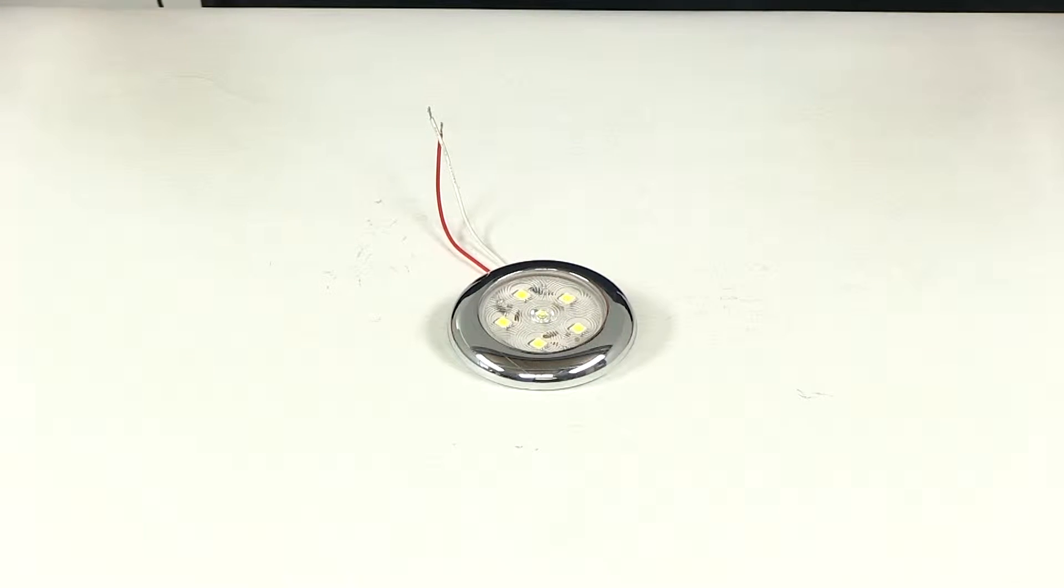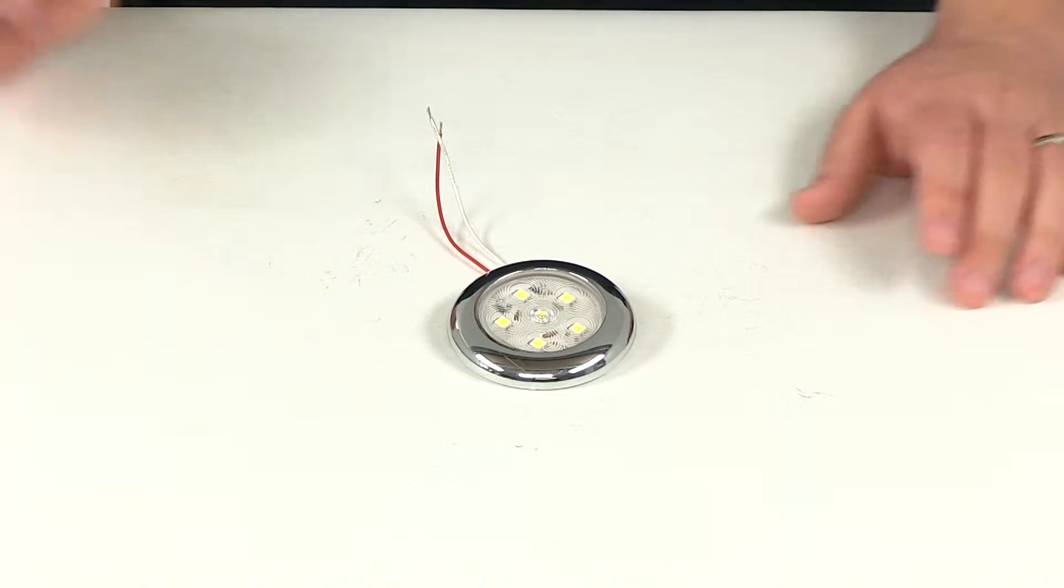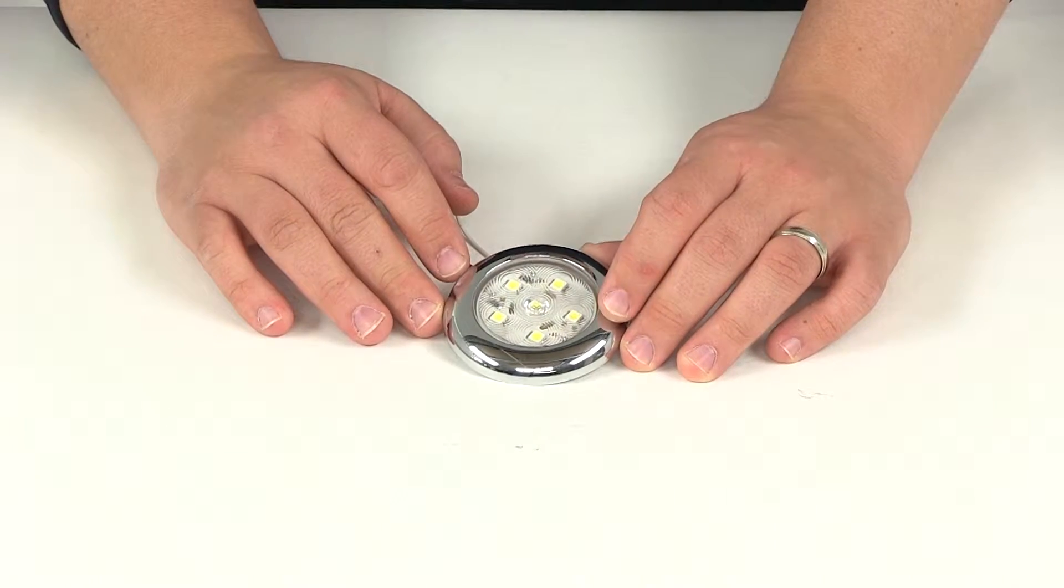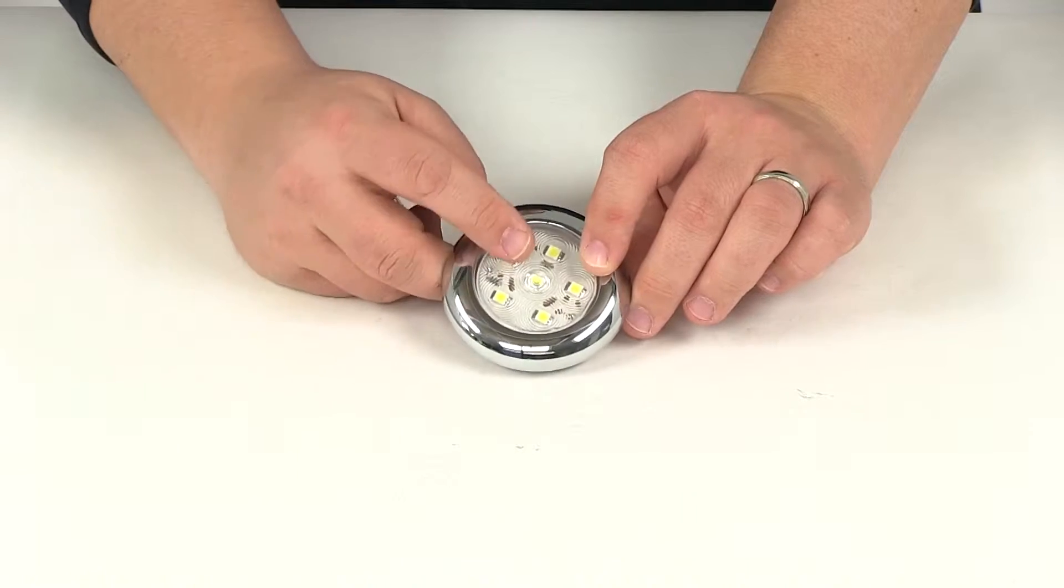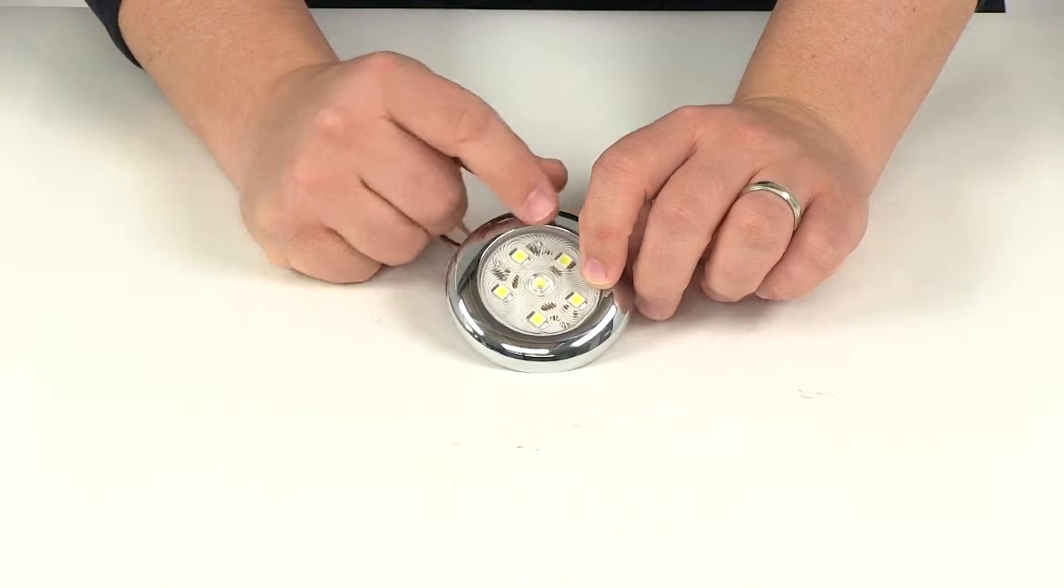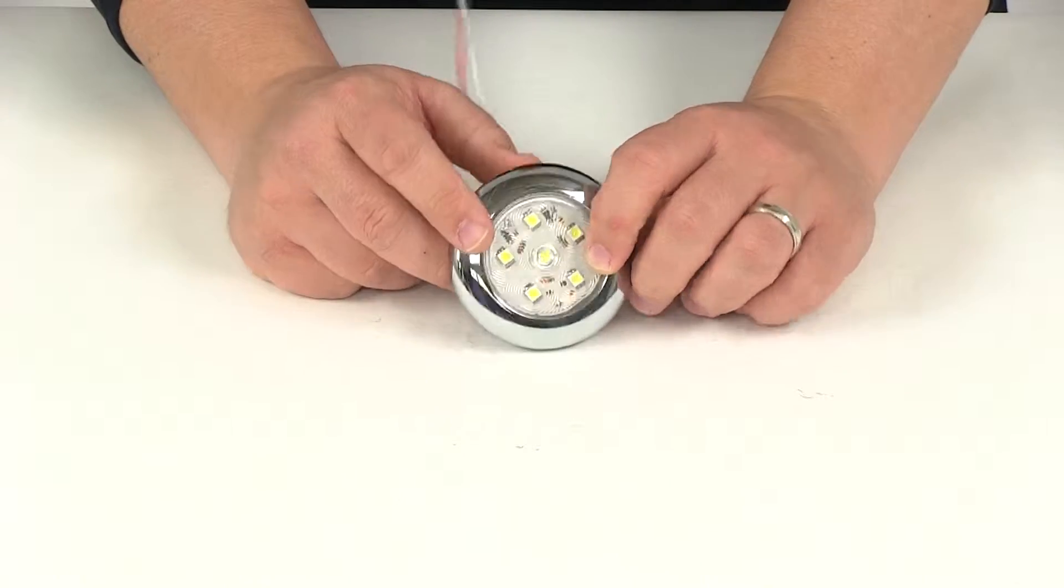Today we're going to be taking a look at part number UCL60CB. This is the three inch clear LED utility light from Optronics. It's a multi-purpose light with a white light, clear lens, and a chrome snap-on trim ring.